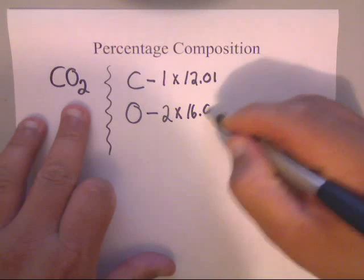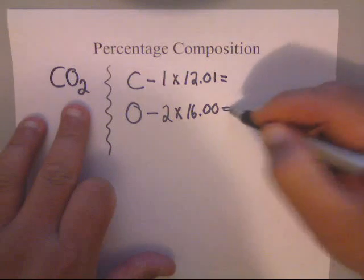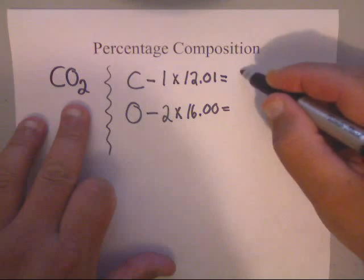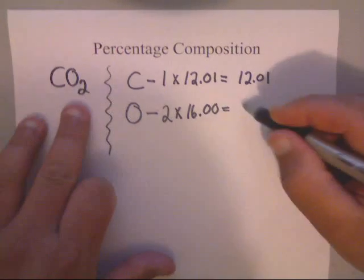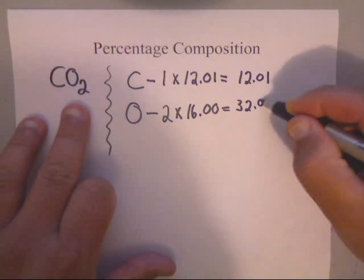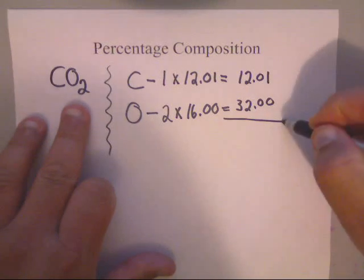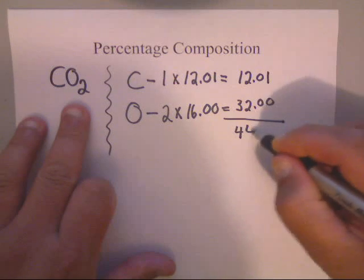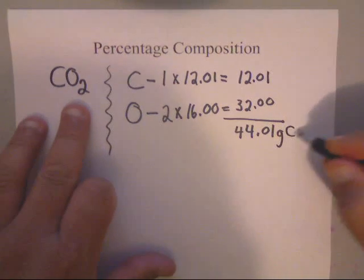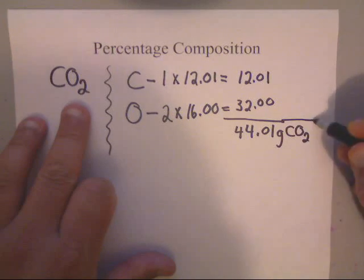You do the math: 1 times 12.01 is 12.01. 2 times 16 is 32. Then you add these up, and we get 44.01 grams for the full CO2. This is the way you've always done molar mass.